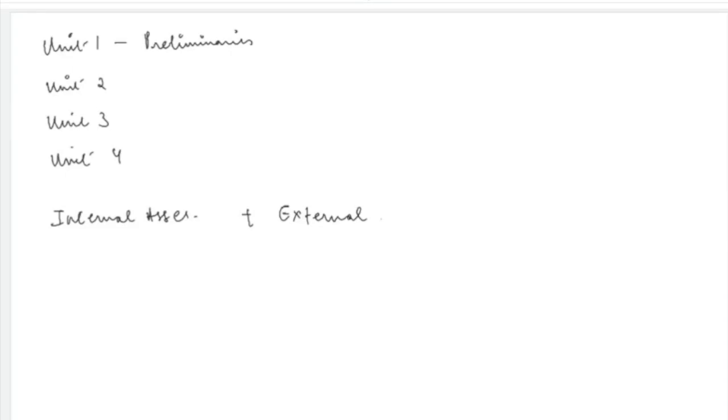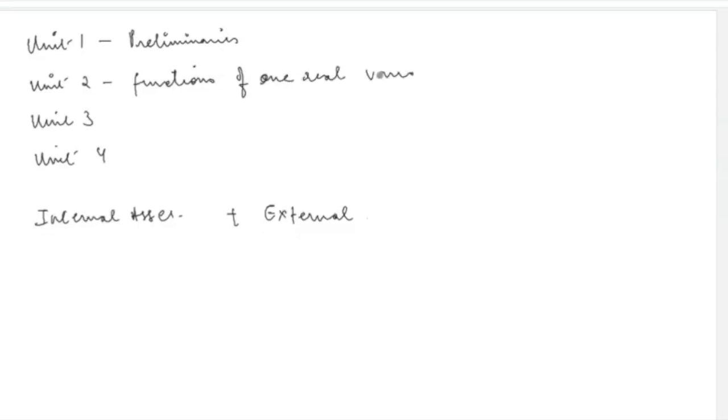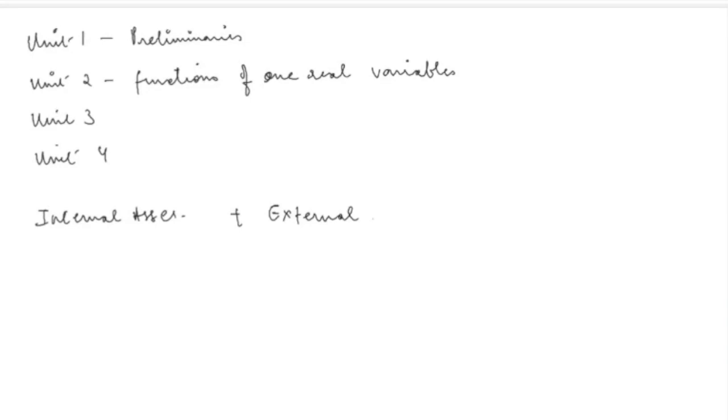Then unit two is on functions of one variable. So we will be talking about functions of one real variable. What are the different concepts related to it? Why are they useful specifically in economics? And what are the kind of conclusions that we can derive? Specifically, what are the conclusions that we can derive about functions that we use in economics?